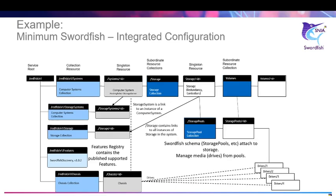This diagram shows the alternate implementation model called the integrated implementation, as the storage instance is integrated into a computer system. The storage is attached to a computer system and a link is also accessible from the storage collection at the service route. You can also see the additional requirements in the computer system instance: the hosting roles property set to storage server, and the storage system collection defined off the service route.